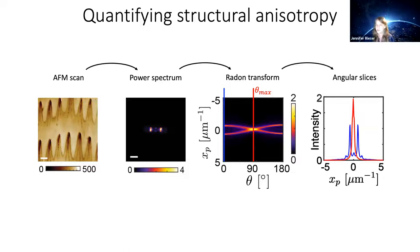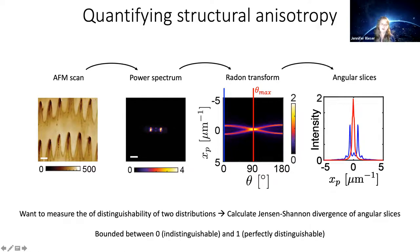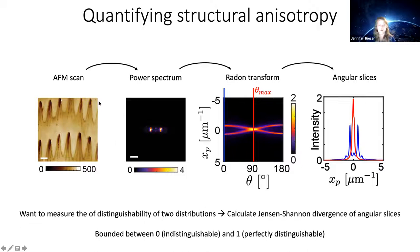To quantify how different or similar these two distributions are, we calculated the Jensen-Shannon divergence of these angular slices — essentially asking how distinguishable the two distributions are. This value is bounded between zero and one: if they're identical the value is zero; if perfectly distinguishable the value is one. We look at slices 90 degrees apart to compare forces along versus across the body.